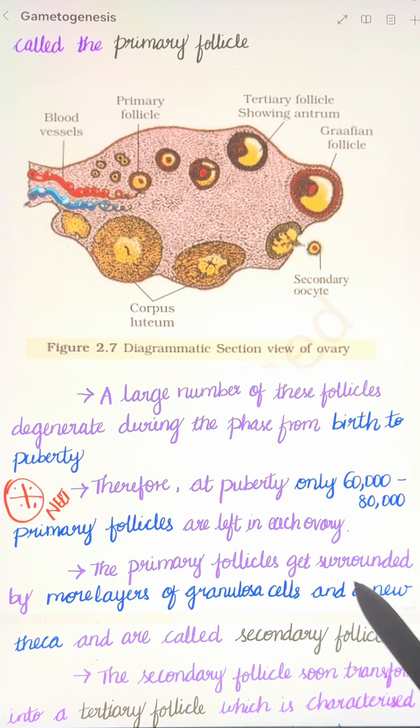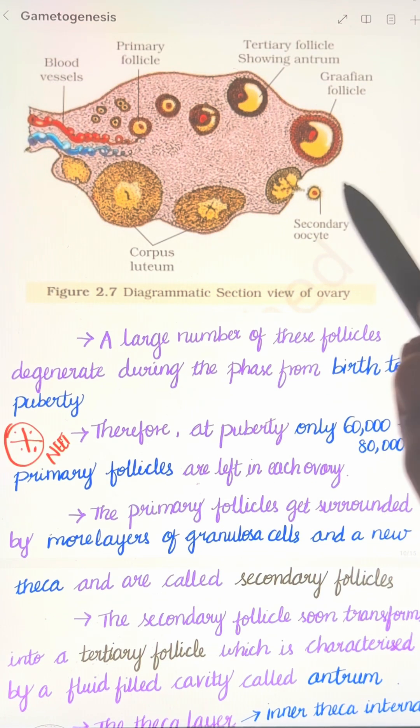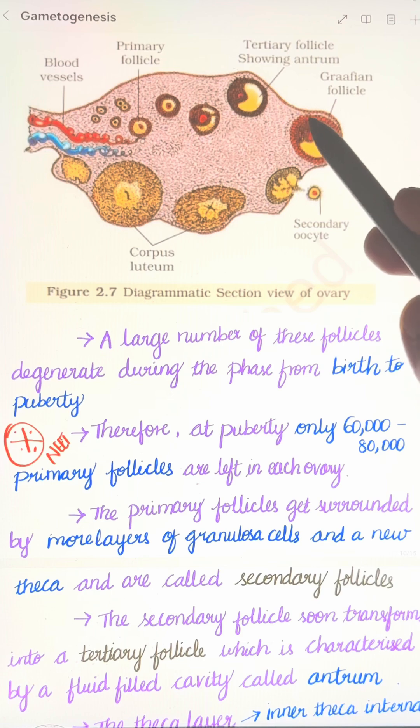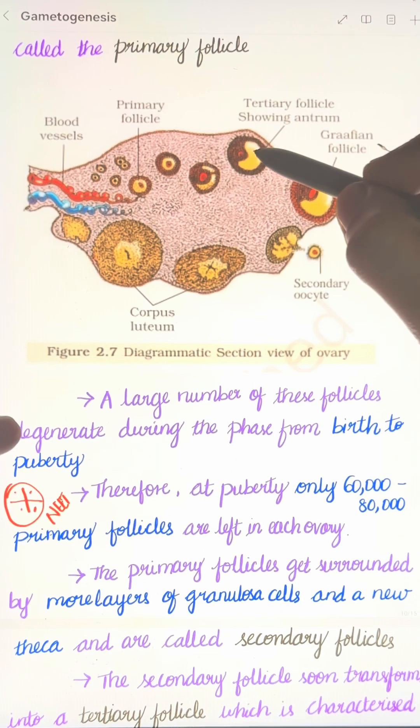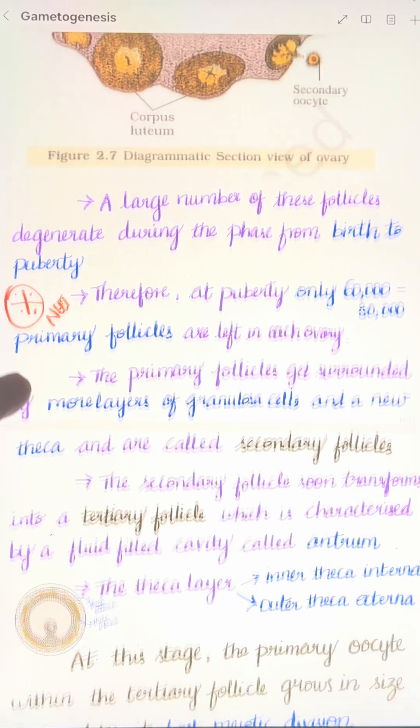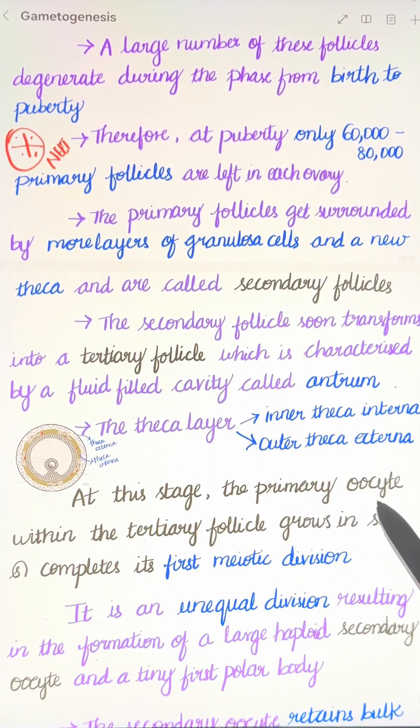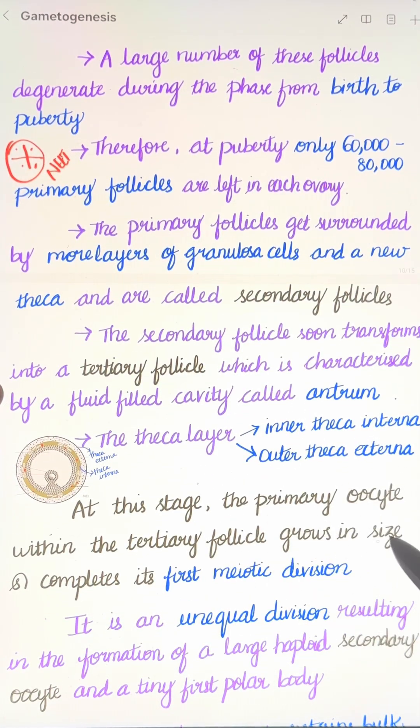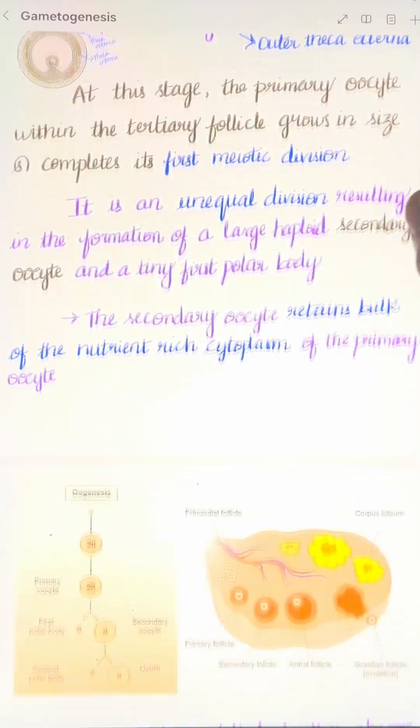The secondary follicles transform into tertiary follicles, which are characterized by a fluid-filled cavity called the antrum. At this stage, the primary oocyte within the tertiary follicle grows in size and completes its first meiotic division.